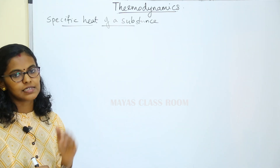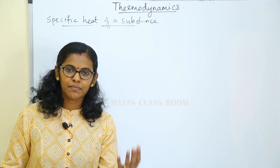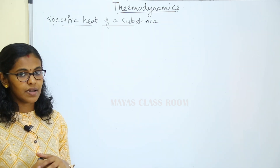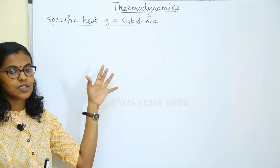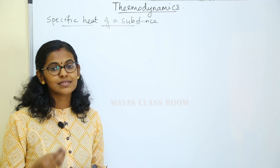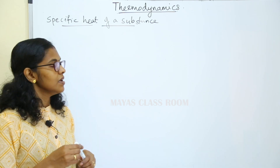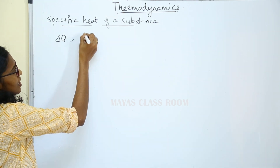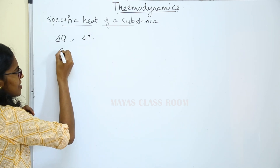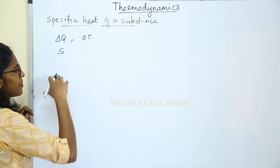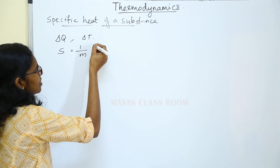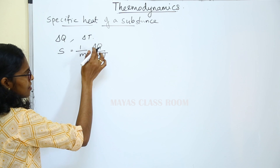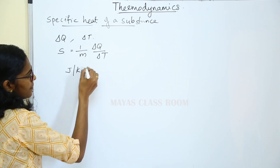The next topic is the specific heat of a substance. Let us consider a unit mass of the substance. We will raise the temperature by 1 Kelvin. That means we will raise the quantity of heat. Specific heat of a substance is the quantity of heat required to raise the temperature of a unit mass of a substance through 1 Kelvin. If delta Q is the amount of heat absorbed by the substance of mass m and delta T is the change in temperature, specific heat capacity S is equal to 1 by m into delta Q divided by delta T. The unit is joule per kg per Kelvin.